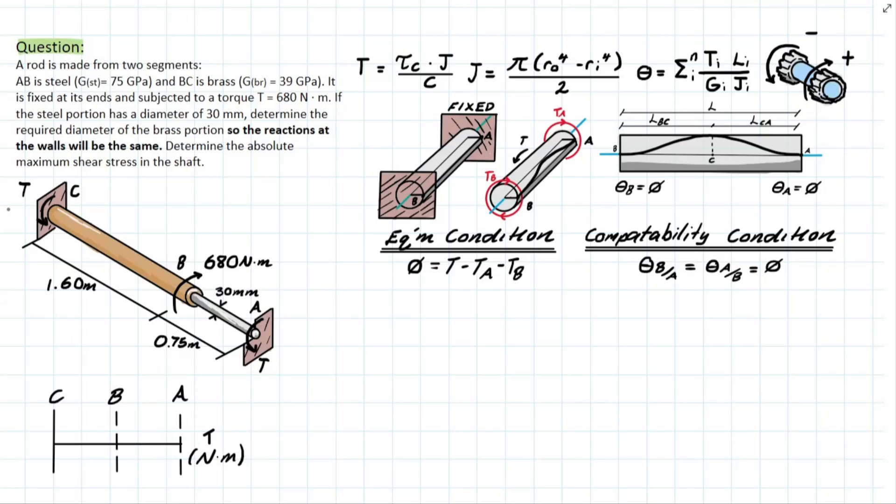So denoting both of these reactions as T and understanding that we have a 680 newton meter torque applied, we understand that for the system to be at zero or in equilibrium we have to have 680 newton meters applied taking away two of these reactions, two of the exact same reactions at both of the ends. And solving for that, we're actually left with 340 newton meters at both ends.